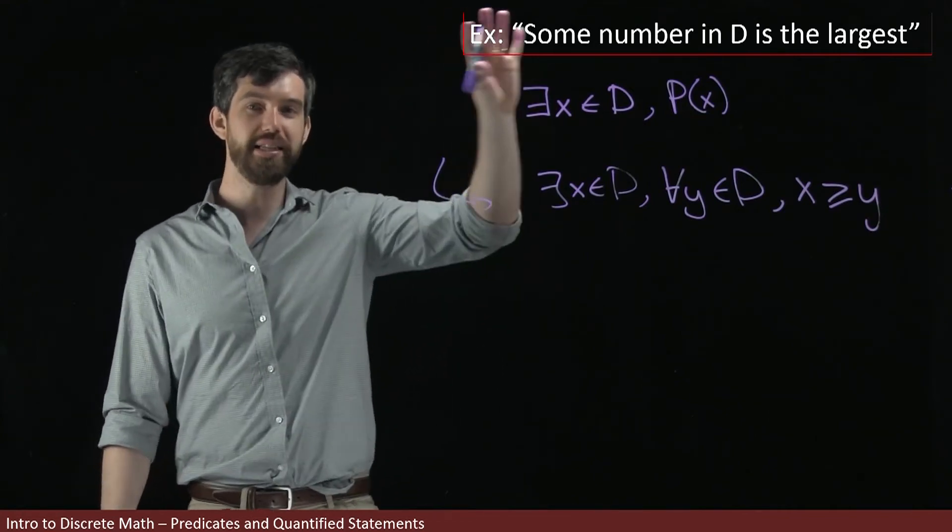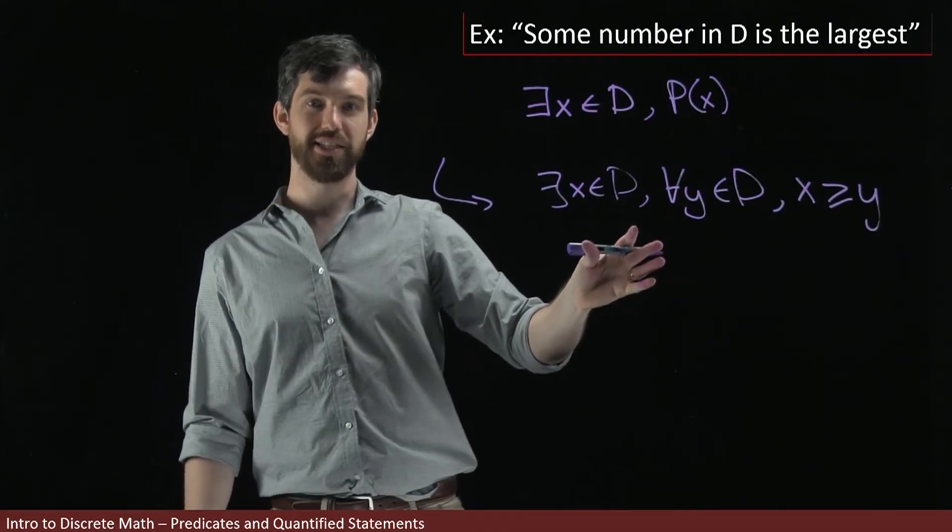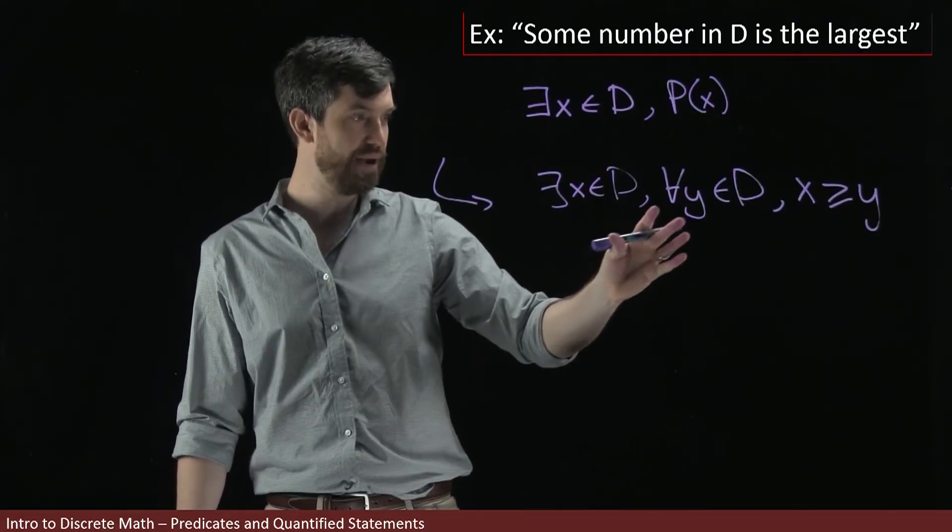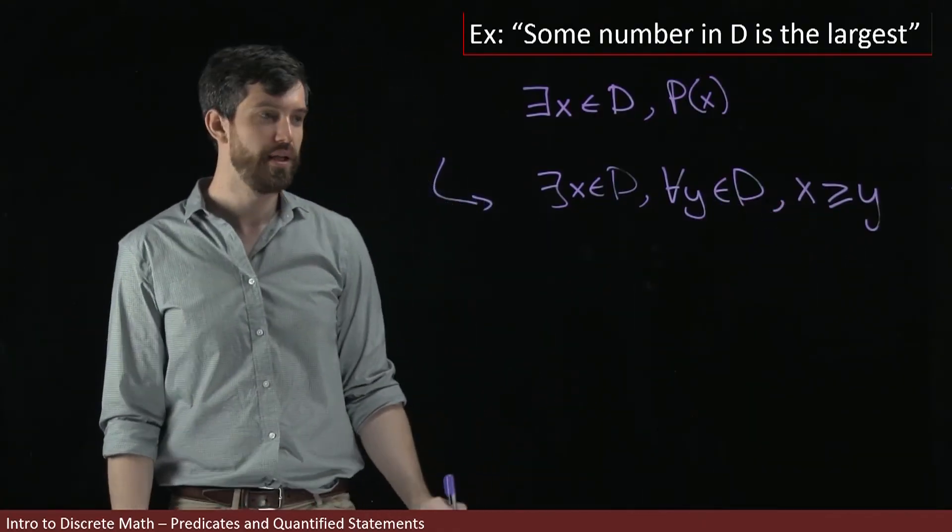So this is how we can take these sentences and break them up in their logical form. There exists something in the domain such that for everything else in the domain, the x is bigger than it. Now, let me suppose that I want to come through and I want to negate this.